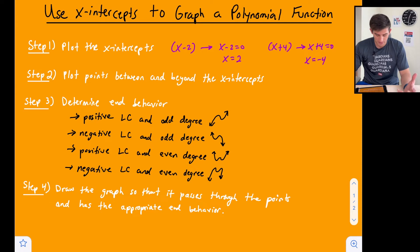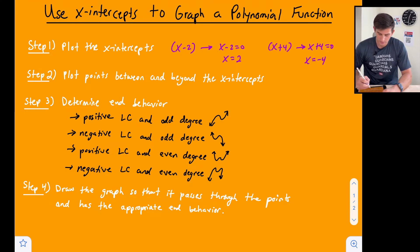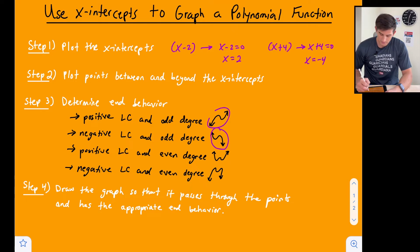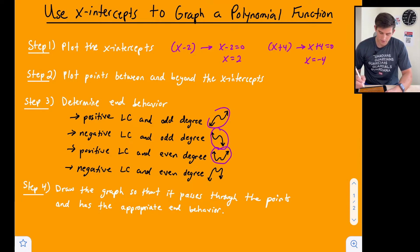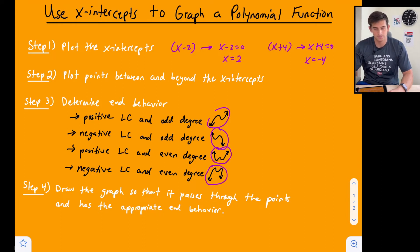Step three: determine our end behavior. There's a separate video on this linked in the cards. Essentially we have four options: a positive leading coefficient with an odd degree — the graph goes down-left and up-right; a negative leading coefficient with an odd degree — the opposite; a positive leading coefficient with an even degree — both ends go up; and a negative leading coefficient with an even degree — both ends go down. The specific shape will vary by the terms, but that's the essential end behavior.